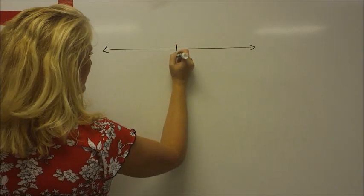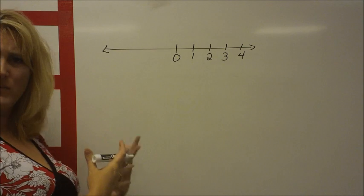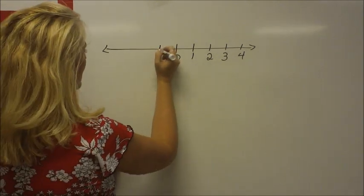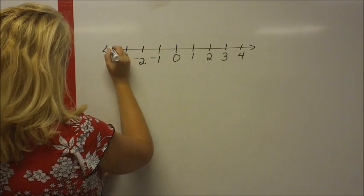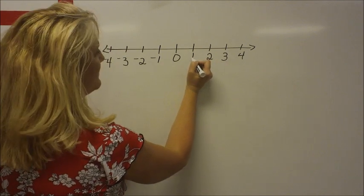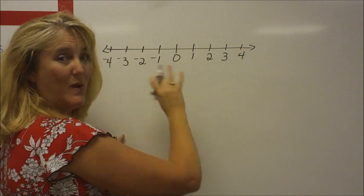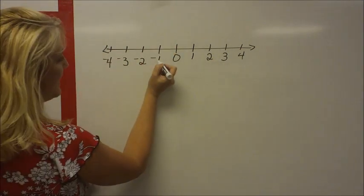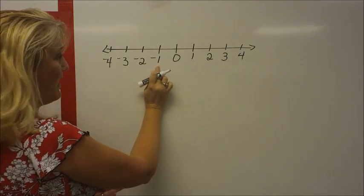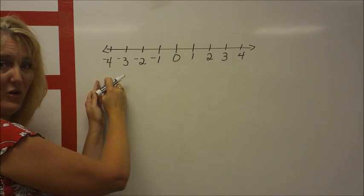Here's a number line with zero in the middle. Going right: one, two, three, four, and it keeps going on and on in both directions. To the left of zero there are numbers smaller than zero: negative one, negative two, negative three, negative four. These are all integers. As you go further to the right, numbers get bigger — two is bigger than one, three is bigger than two. On the left side, negative one is closer to zero than negative two, so negative one is actually bigger than negative two. The further left you go, the smaller the number actually gets, even though they appear to be getting bigger.